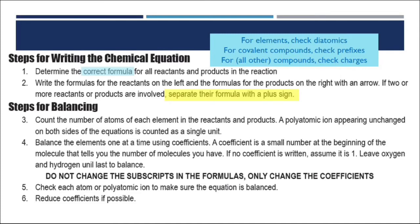When it comes to balancing, we just need to count the number of atoms of each element very carefully on both sides. Our goal is for these to be equal on both sides of the reaction, but in most cases they're not going to start equal — we're going to have to make them equal. One important note: when you see a polyatomic ion on both sides of the equation, you can count and balance it as a single unit instead of breaking it up and balancing each element separately.